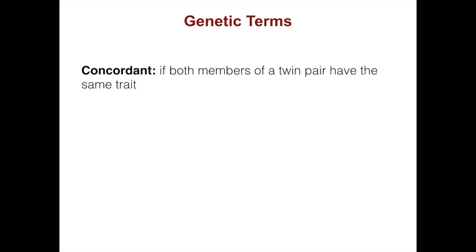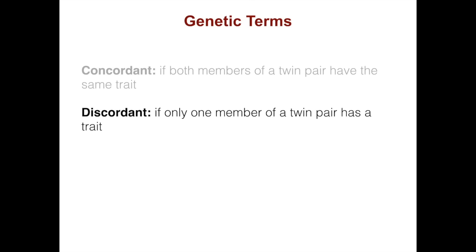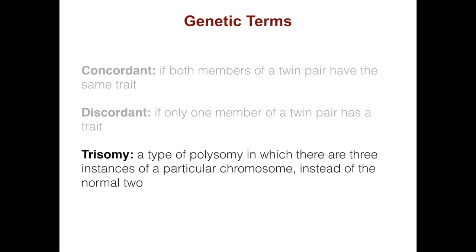There are not a lot of new genetic terms for this lecture, but here are a few. Concordant: if both members of a twin pair have the same trait. Discordant: if only one member of a twin pair has a trait. Trisomy: a type of polysomy in which there are three instances of a particular chromosome instead of the normal two, responsible for some of the chromosomal abnormalities and birth defects we discussed. Next time, we will be talking about mapping of genes. See you next time.